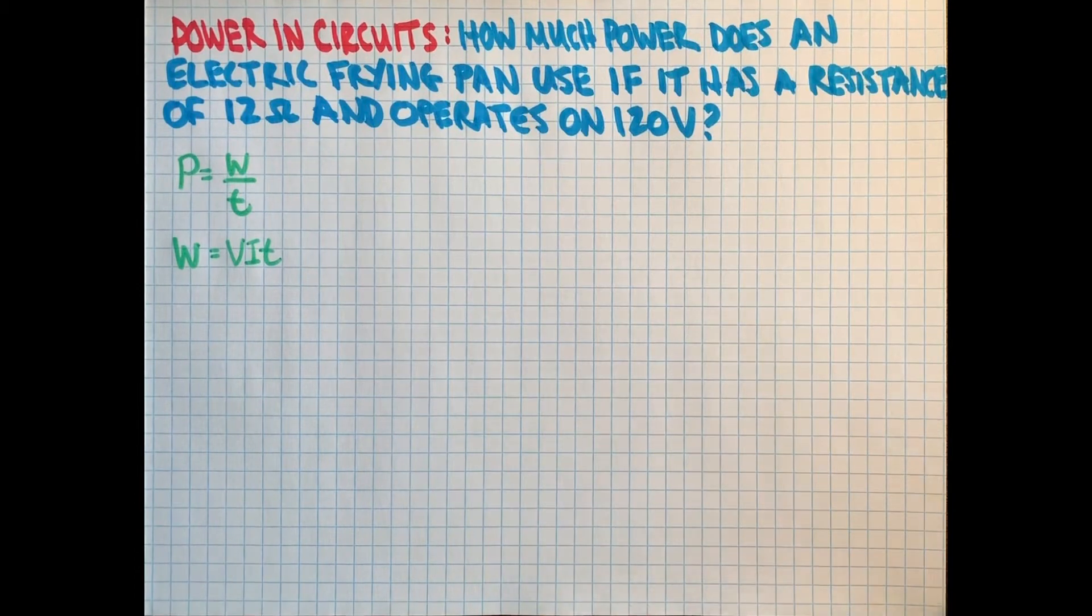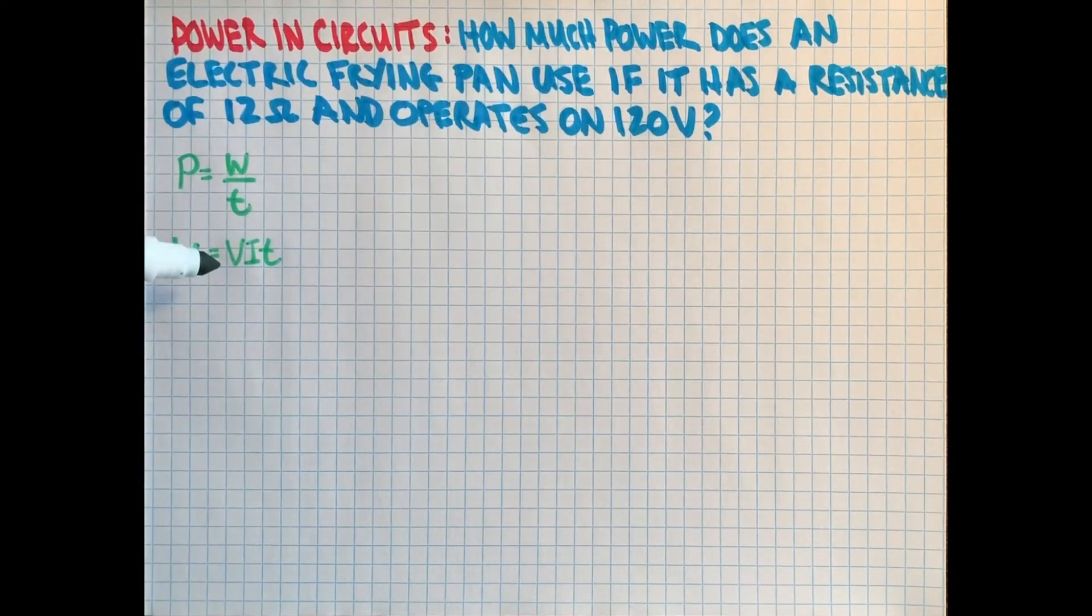We did an example with that one in a previous video. And so that's there, right? We have a voltage in there, great. And we have a resistance, which is not in there. But this isn't a rate. This is just the amount of work.